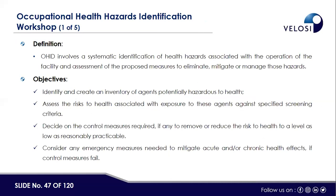The third workshop is OHID — the Occupational Health Hazard Identification workshop. It involves the systematic identification of hazards associated with the operation of the facility, and assessment of proposed measures to eliminate, mitigate, or manage hazards that can potentially impact workers or the workplace. The objective is to identify and create an inventory of agents potentially hazardous to health of workers, assess the risk to health associated with exposure, decide on control measures, and consider emergency measures needed to mitigate acute or chronic health effects.